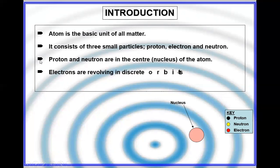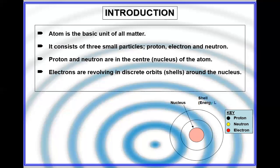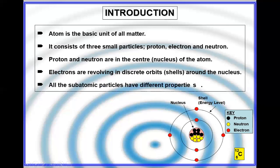Electrons are revolving around the nucleus in orbits, shells, and energy levels. All electrons are revolving around the nucleus. These are all atomic particles.